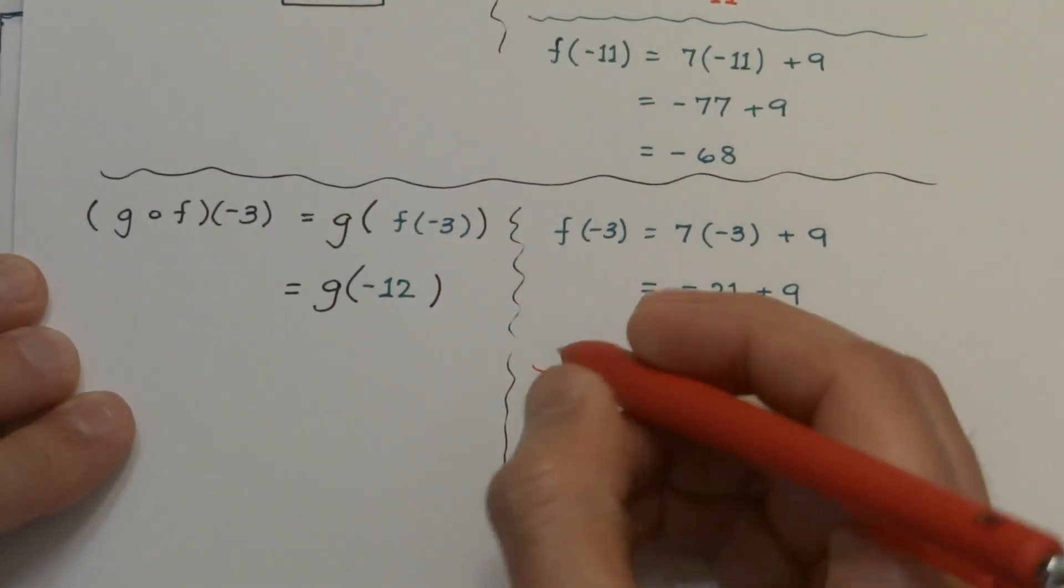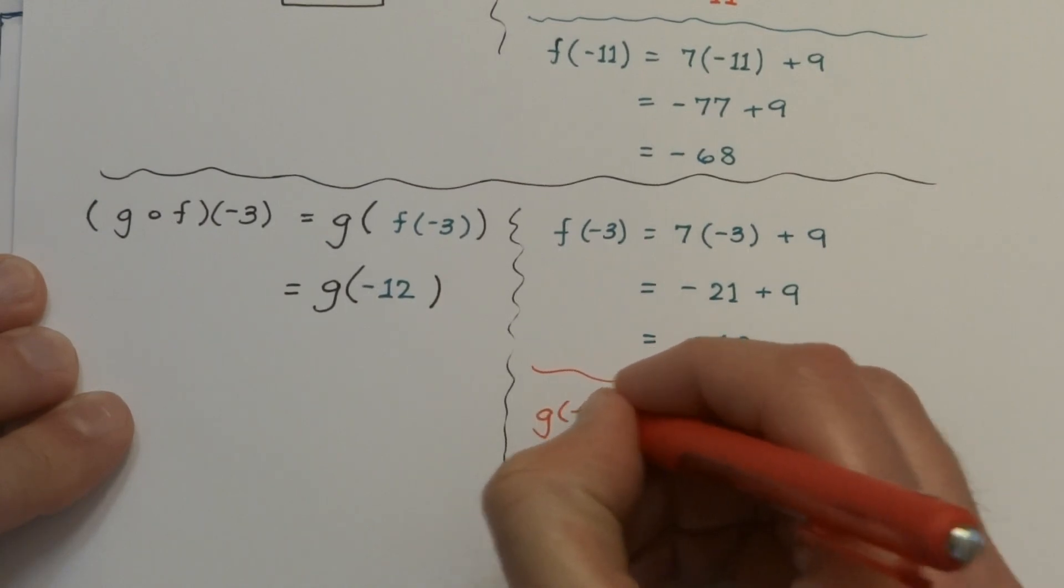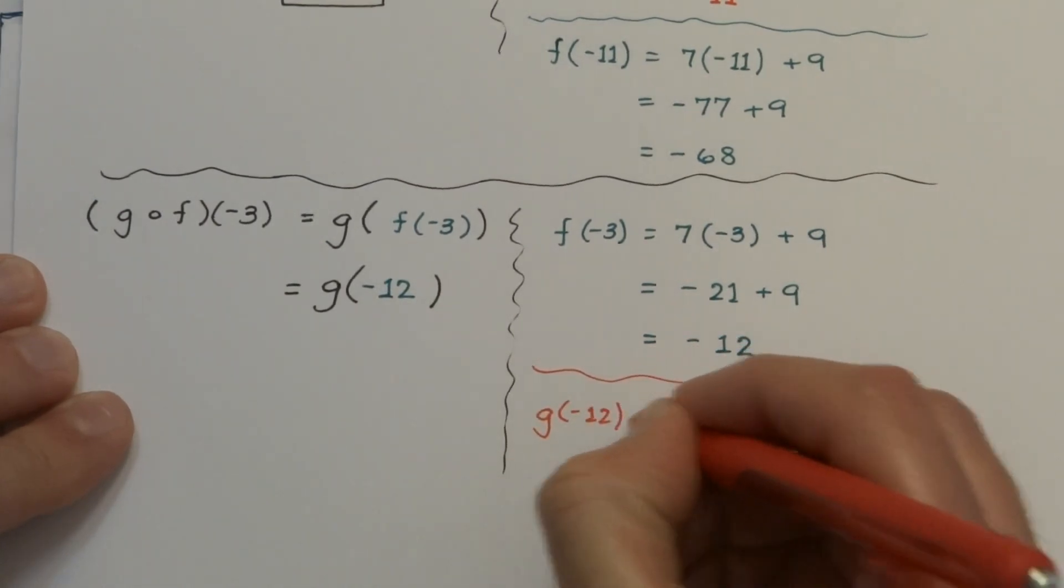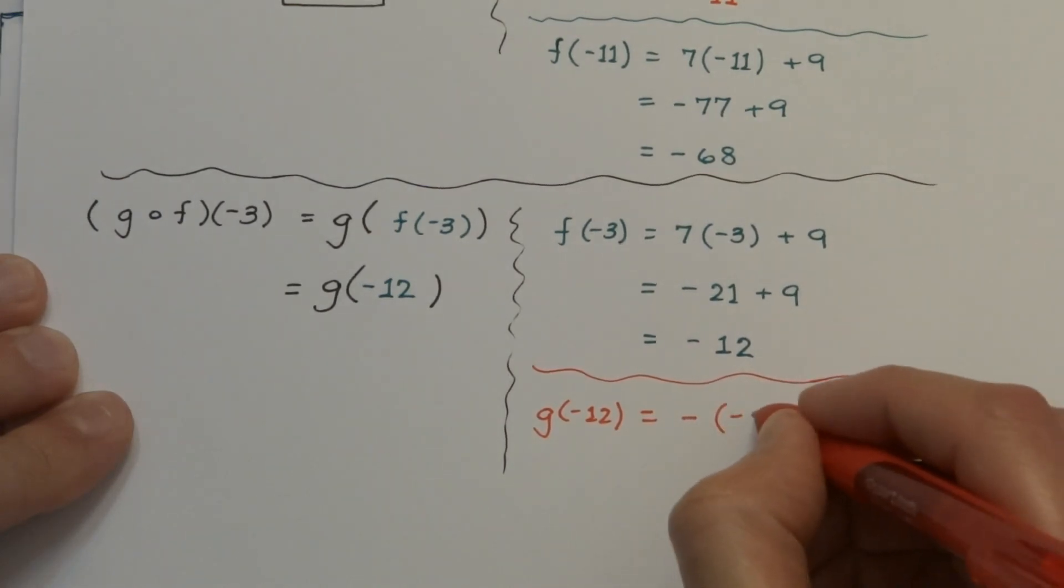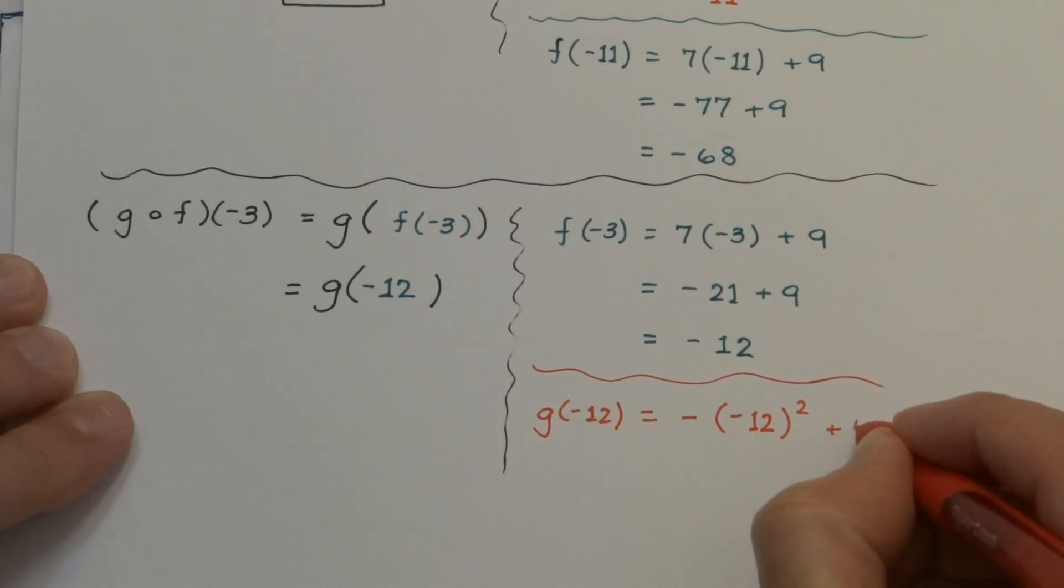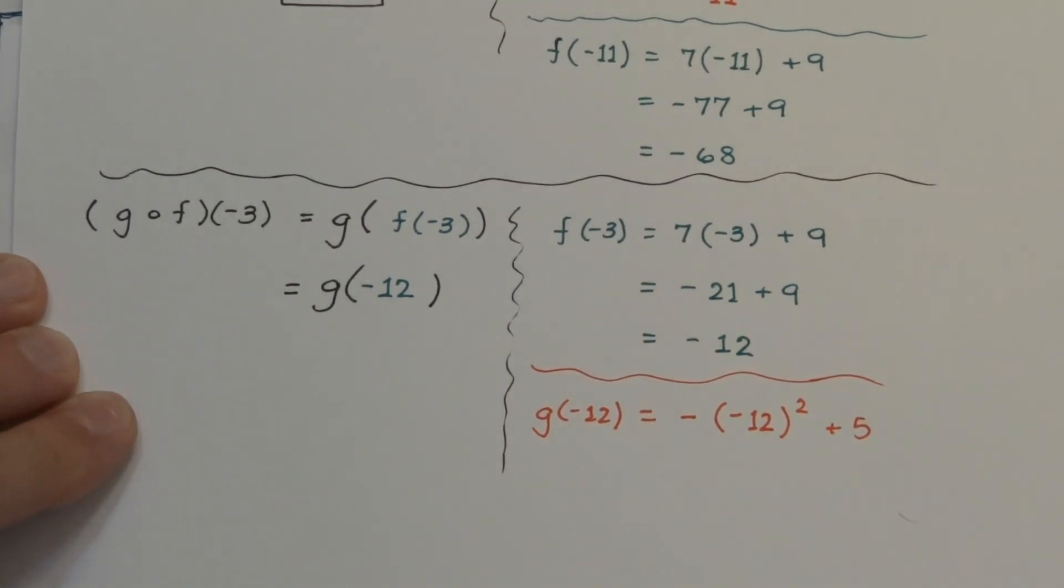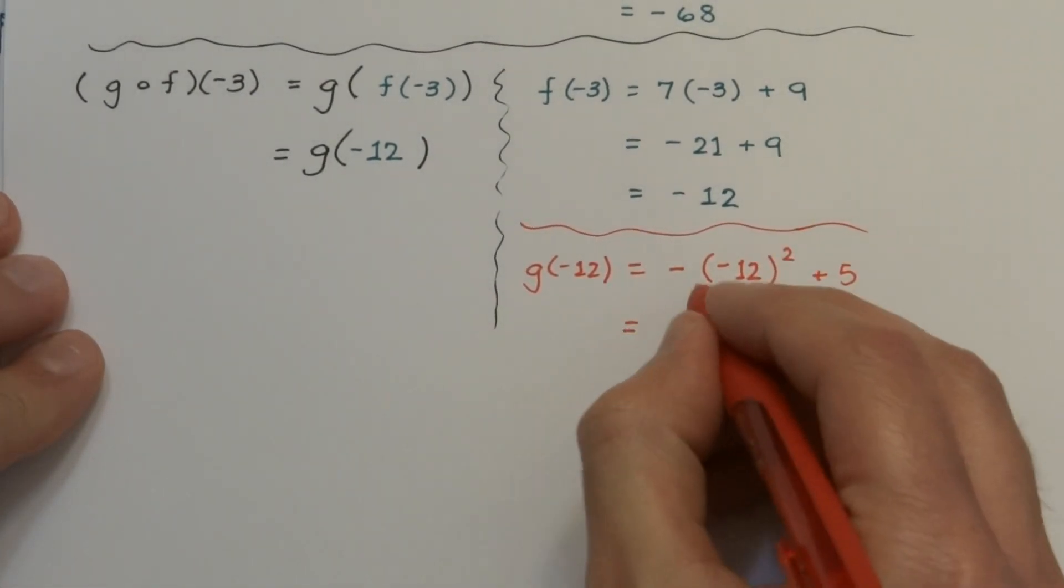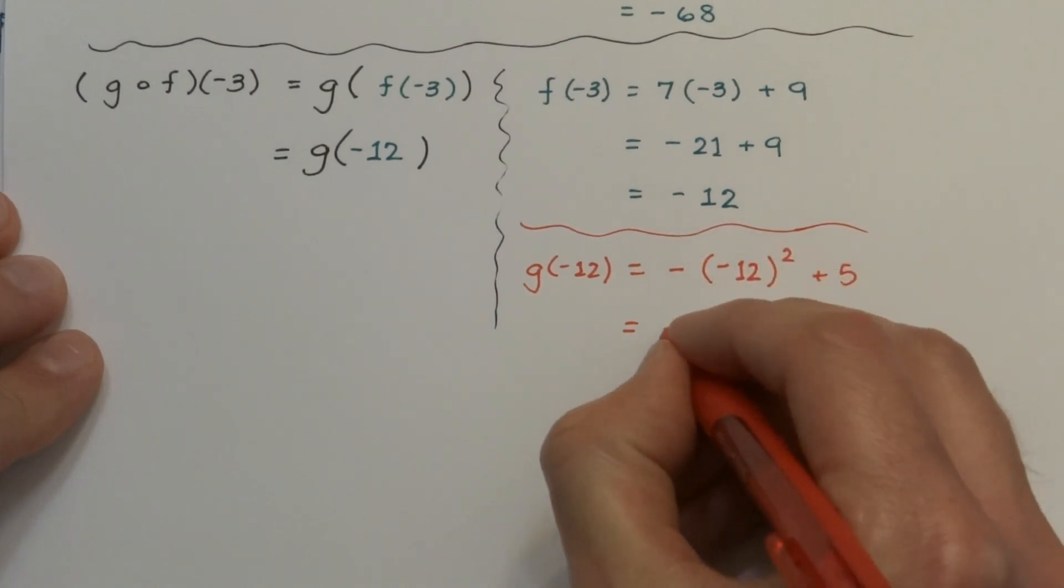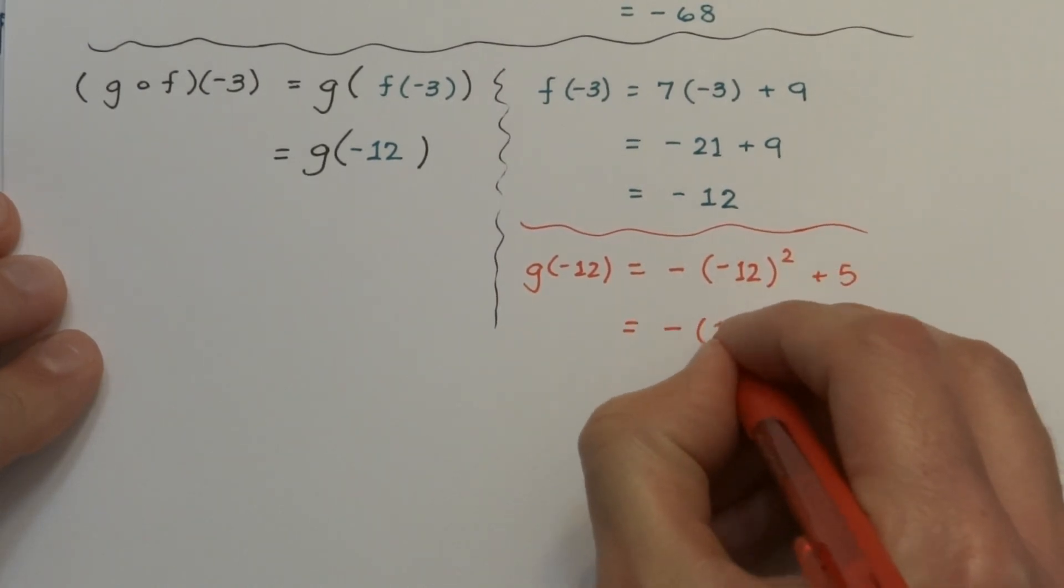So over here to the side, let's evaluate g of negative 12. Make sure you pay very close attention to your signs. So that's negative parentheses negative 12 squared plus 5. When we're doing the operations here, please make sure you pay attention to the fact that these two negatives don't get to see each other. The square is applied to the negative 12 first, which gives us a positive 144.